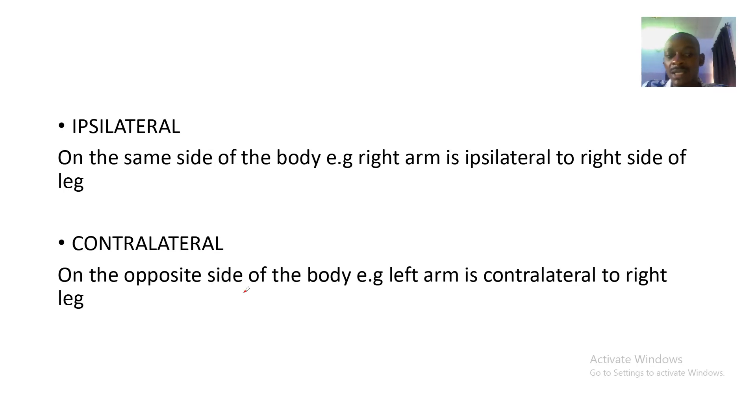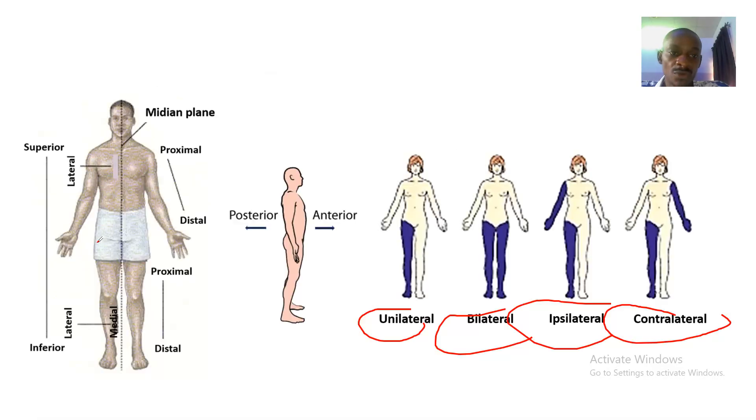Contralateral is on the opposite side of the body where we say that the left arm is contralateral to the right leg. The left arm is on this side while the right leg is on that side. So instead of talking like a layman, you say that the left arm is contralateral to the right leg.